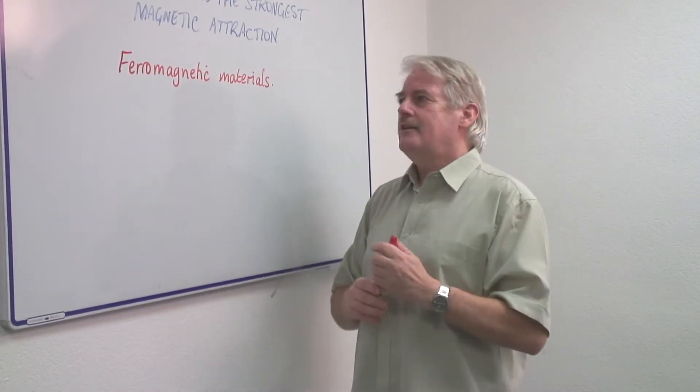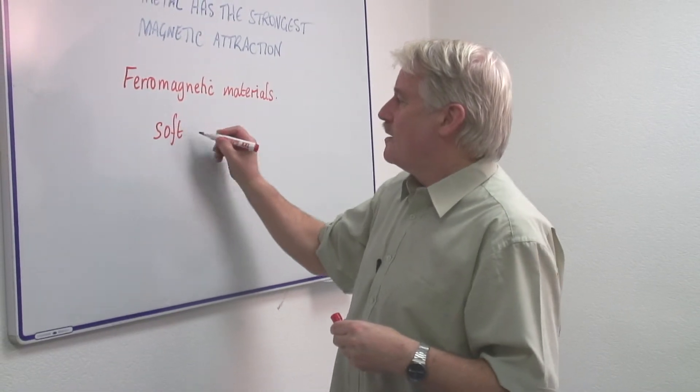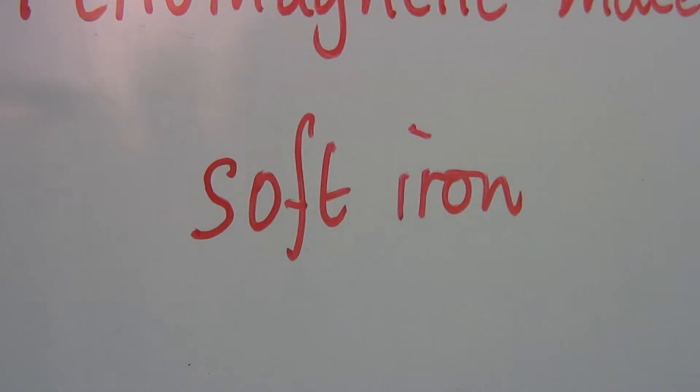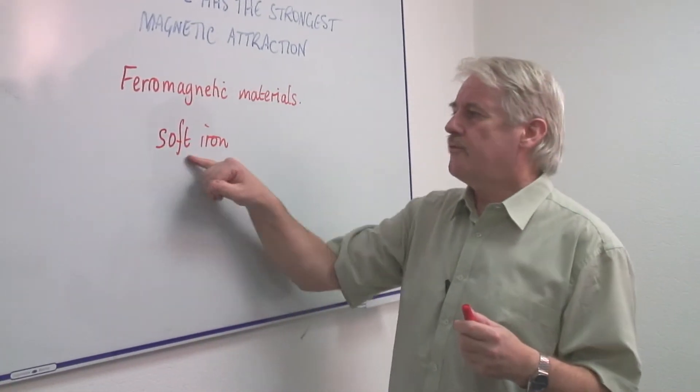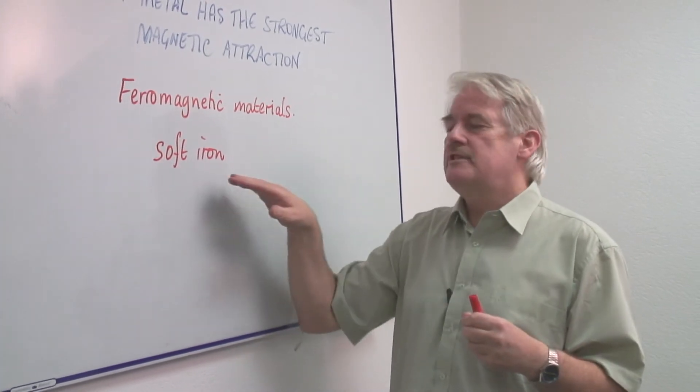Whereas soft iron as they call it, surprising name this, soft iron because it is not soft at all. Actually it is quite hard. Iron is a metal, it is hard. But soft iron is easy to magnetize and easy to demagnetize.